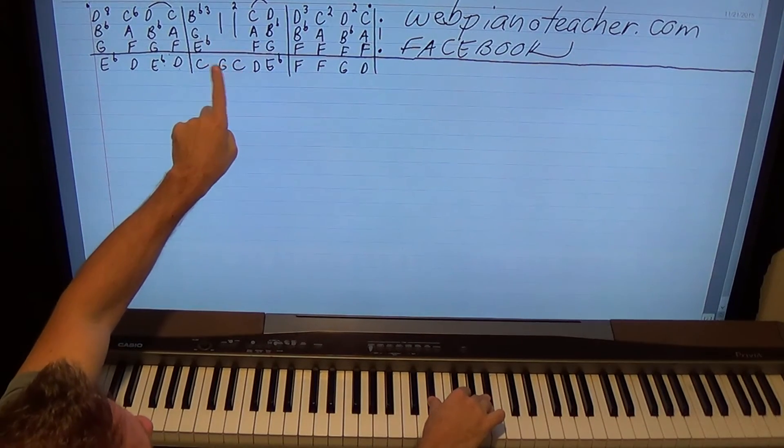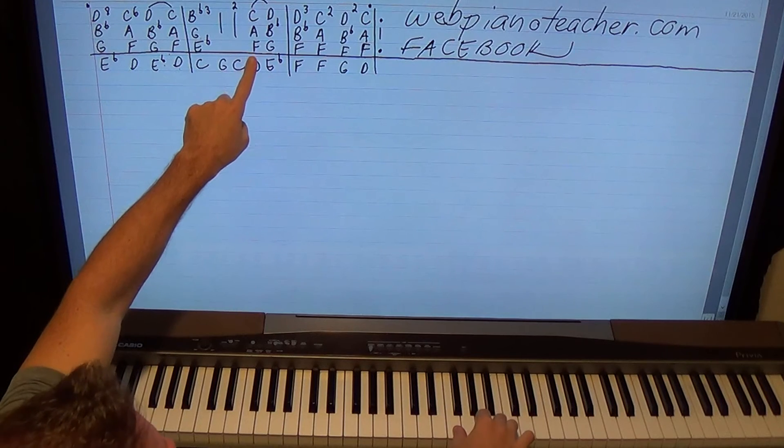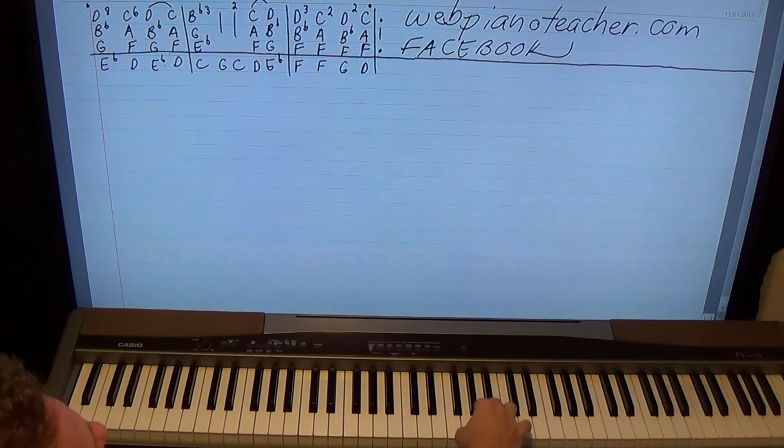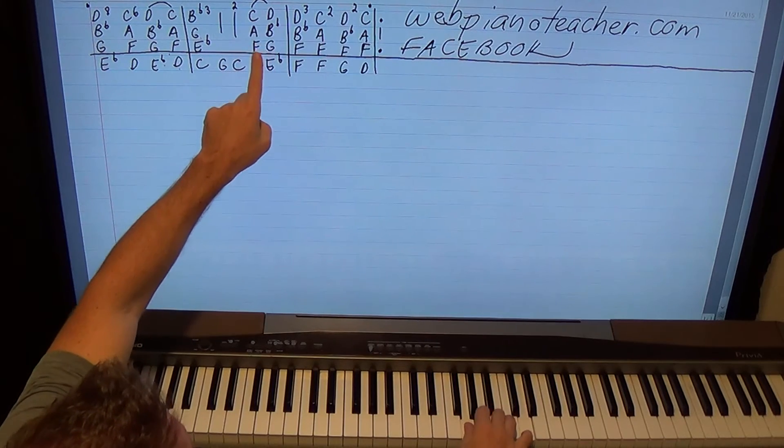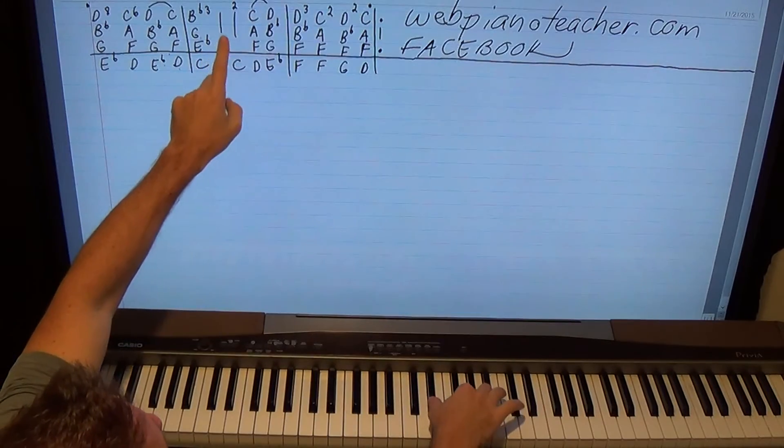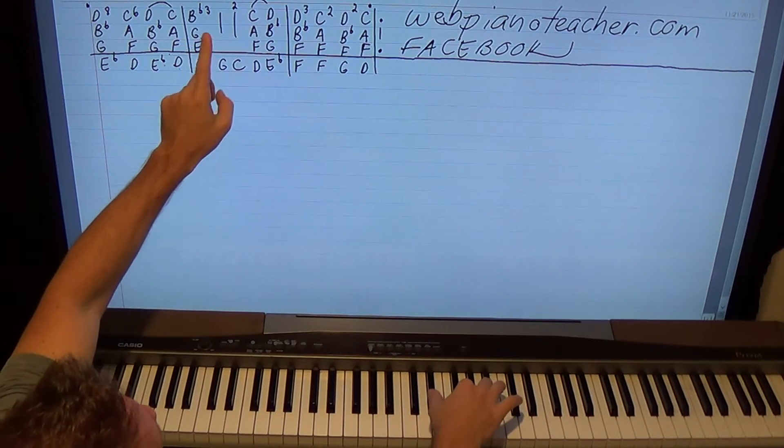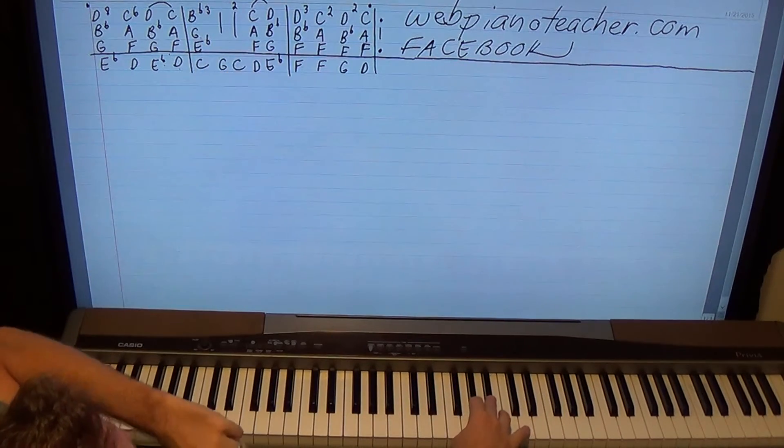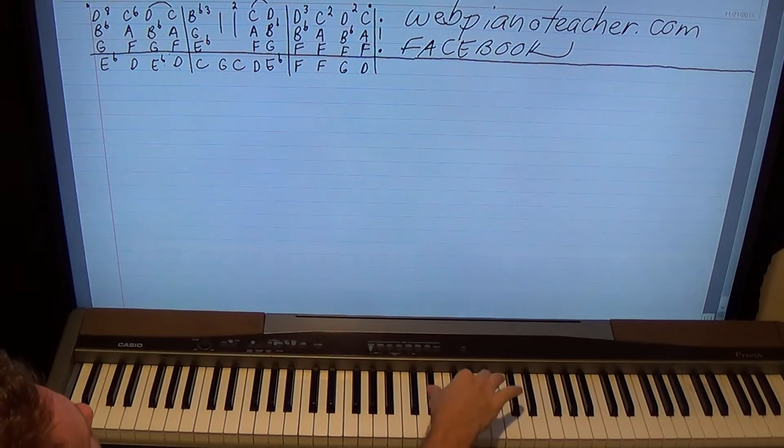Why did I do it that way? Because the left hand will change there. We'll look at that in a minute. But after that we have F, A, C and then G, B flat, D. And I'm going to use one, two, four and one, three, five again respectively. On that.